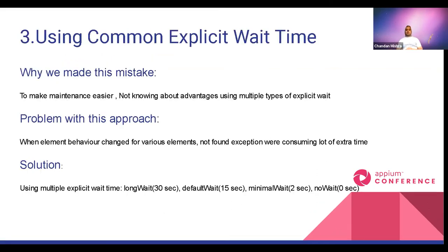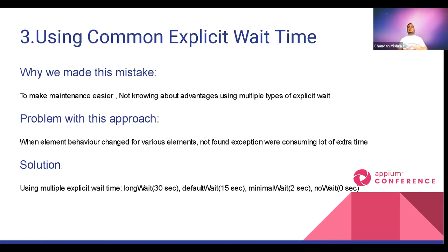The third optimization is using multiple explicit wait times rather than a single constant. When tests fail, a single 30-second explicit wait applied to five elements means you wait 150 seconds. But if you categorize elements intelligently, you can reduce this significantly. The first important element on a dynamic page can have a long wait of 30 seconds, while normally loaded elements get 15 seconds.